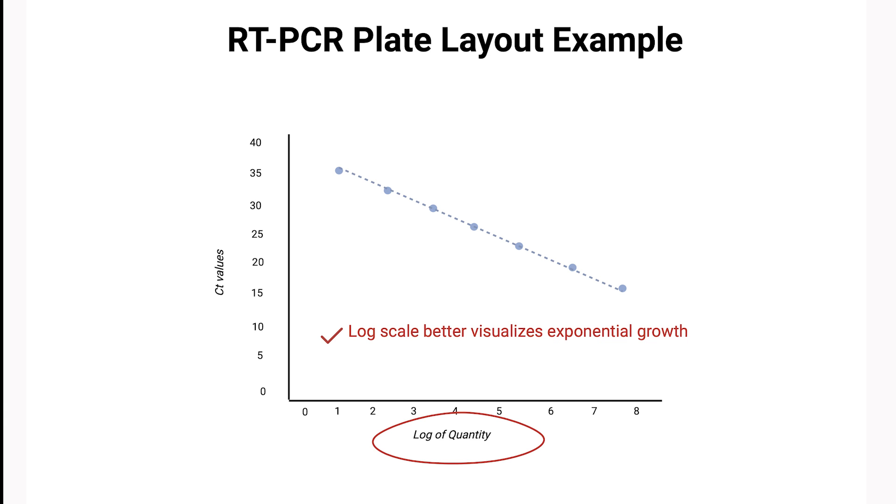Secondly, qPCR can detect DNA across various concentrations. Plotting logarithms compresses this wide range of data into a manageable scale, allowing us to easily compare vastly different DNA concentrations.